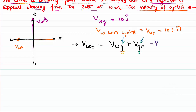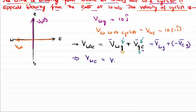Now, it is not appropriate to say the ground moves with respect to the cyclist — rather, we write velocity of ground with respect to cyclist as minus velocity of cyclist with respect to ground. So the equation becomes: velocity of wind with respect to cyclist equals velocity of wind with respect to ground minus velocity of cyclist with respect to ground. Substituting: -10i cap equals 10j cap minus velocity of cyclist with respect to ground.